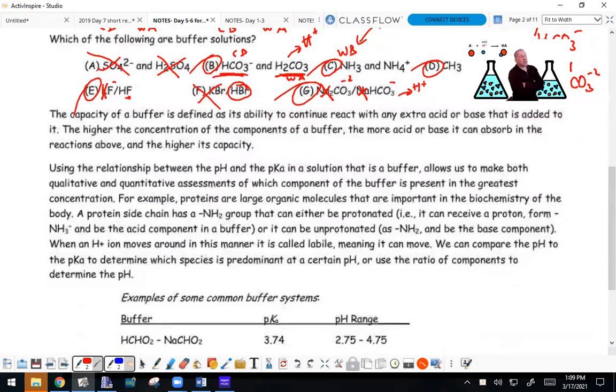Now, what about buffering capacity? We can add a strong acid or strong base to this and we don't get much change in pH. The capacity of a buffer is its ability to react with acid or base. The higher the concentrations, the more acid or base it can absorb. More moles means higher capacity because it's a stoichiometry problem - a chemical reaction, not equilibrium.